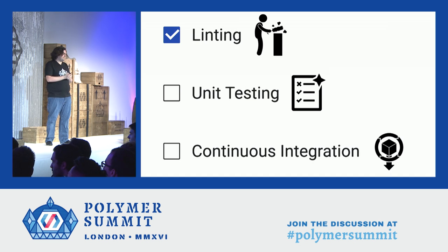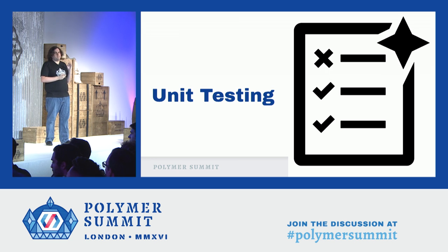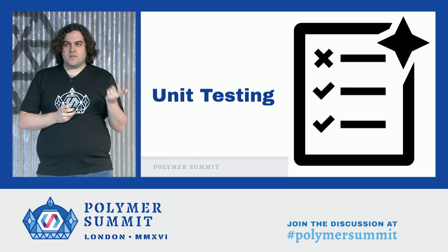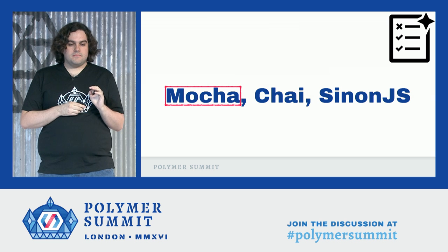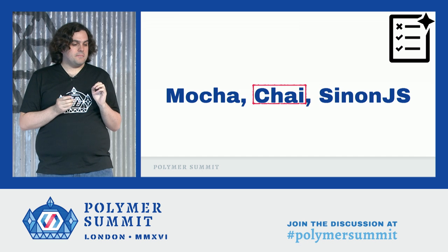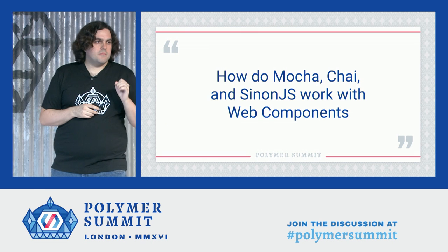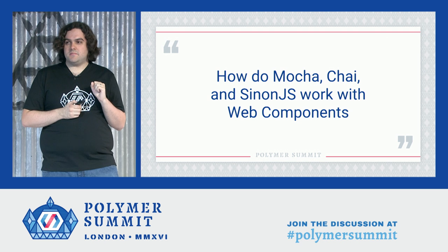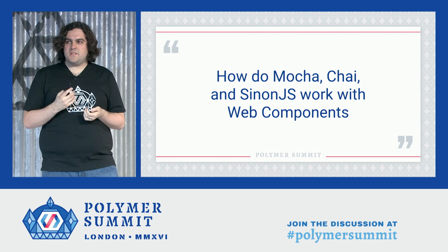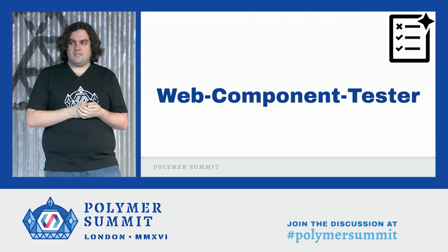Now we can move on to unit testing. Unit testing is really what most people think about when they say testing — where you write scenarios for your code, know the inputs, and can test the outputs against the expectations of your algorithms and processes. Typically in web development, unit testing involves Mocha, a test framework; Chai, an assertion library; and Sinon.js, a mocking and spying library. This combination works well for thousands of projects. But we on the Polymer team were faced with a question: how do we make Mocha, Chai, and Sinon.js work the best with web components and Polymer? We tried a number of tools, but in the end we decided we really needed to make our own.